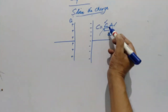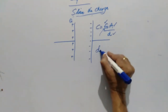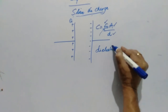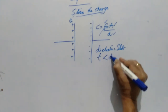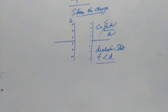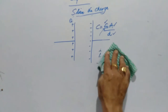The permittivity of the vacuum is epsilon naught. Now, in place of vacuum, if you insert any dielectric slab — nothing but an insulator — of thickness T, which should obviously be less than D, then there is a chance of increasing the capacitance. Let us see whether the capacitance is really increased or not.